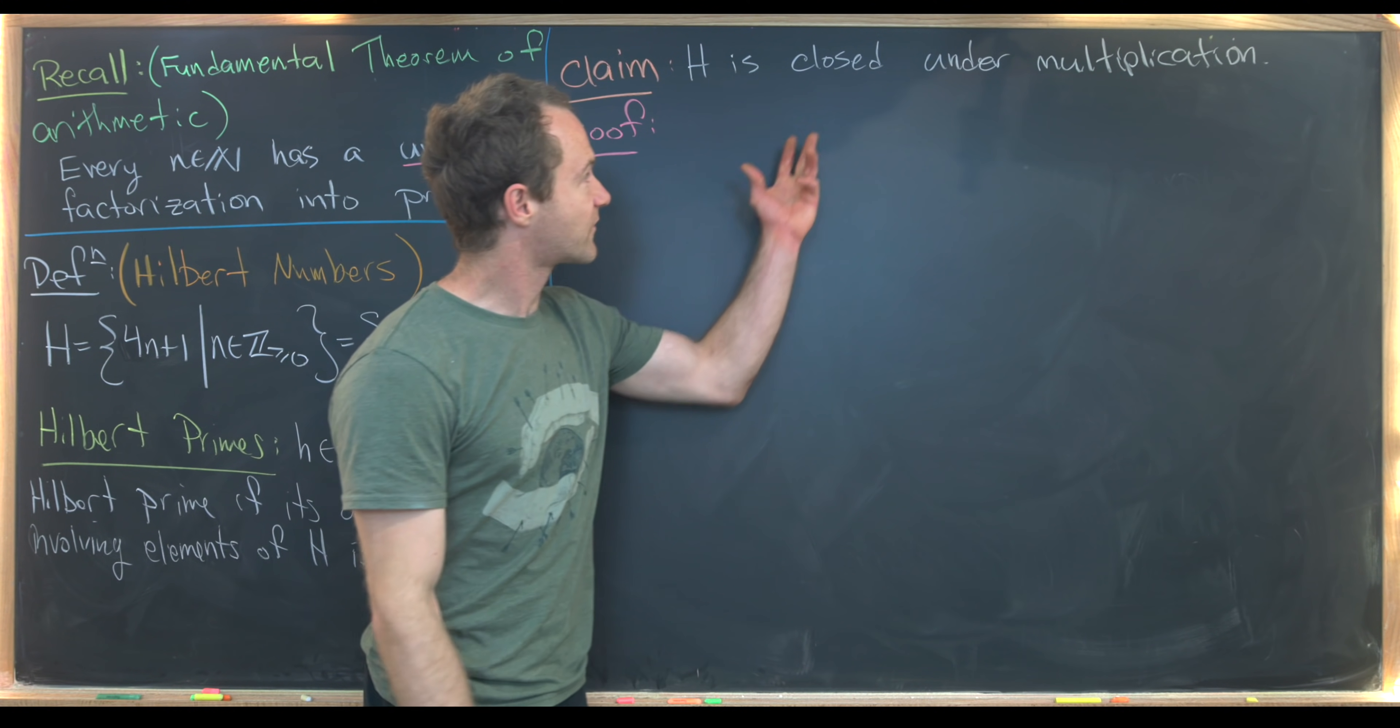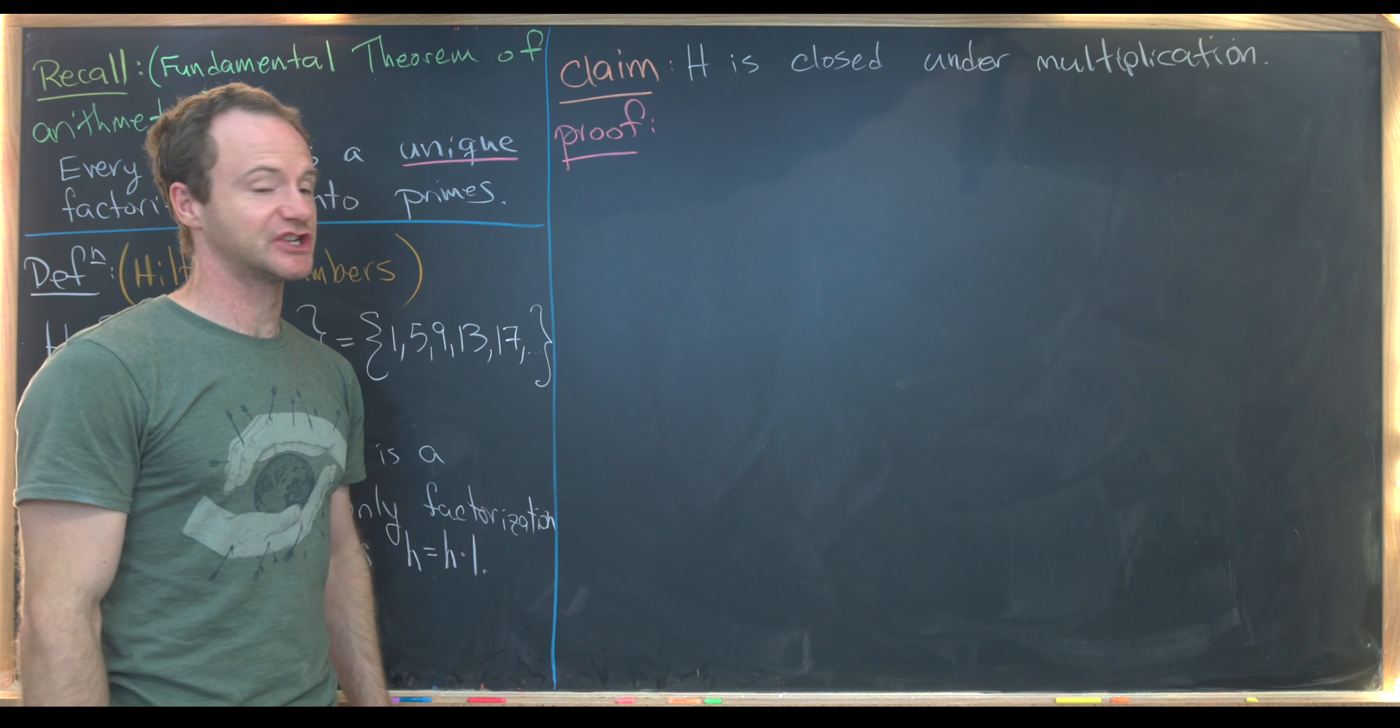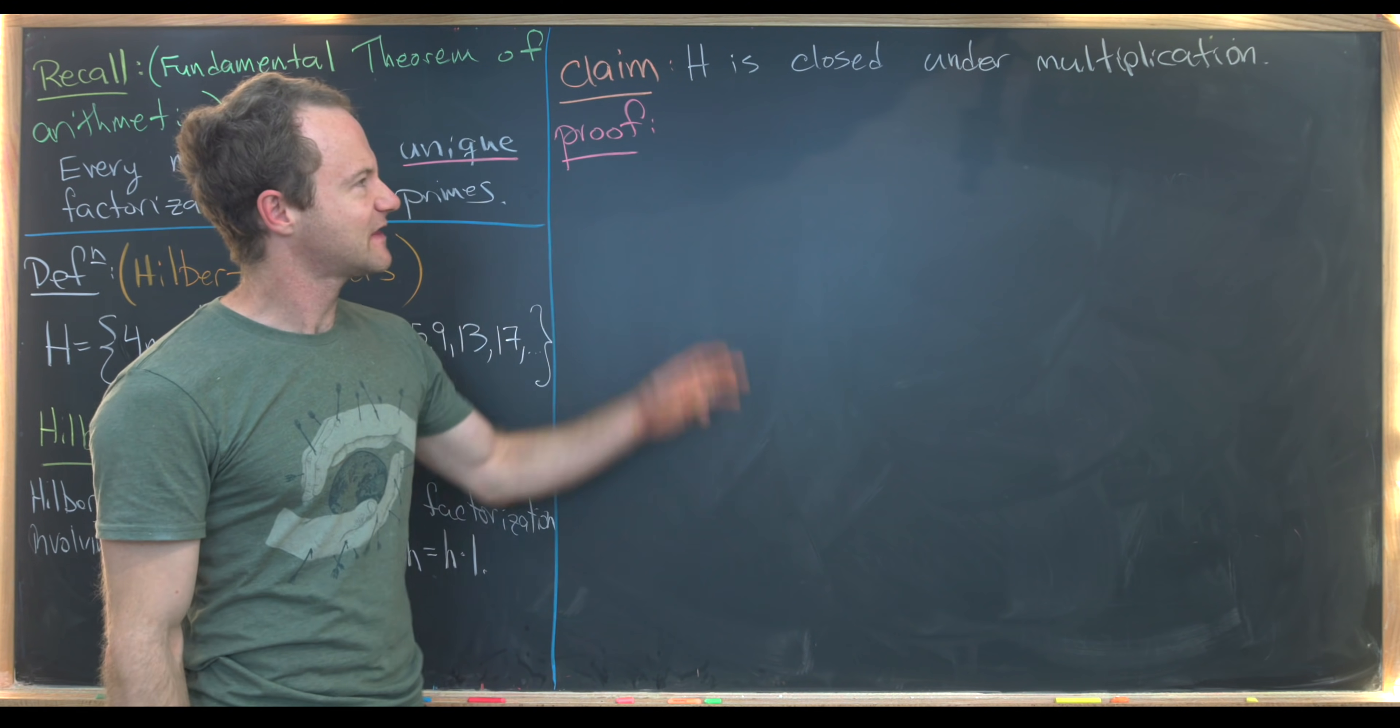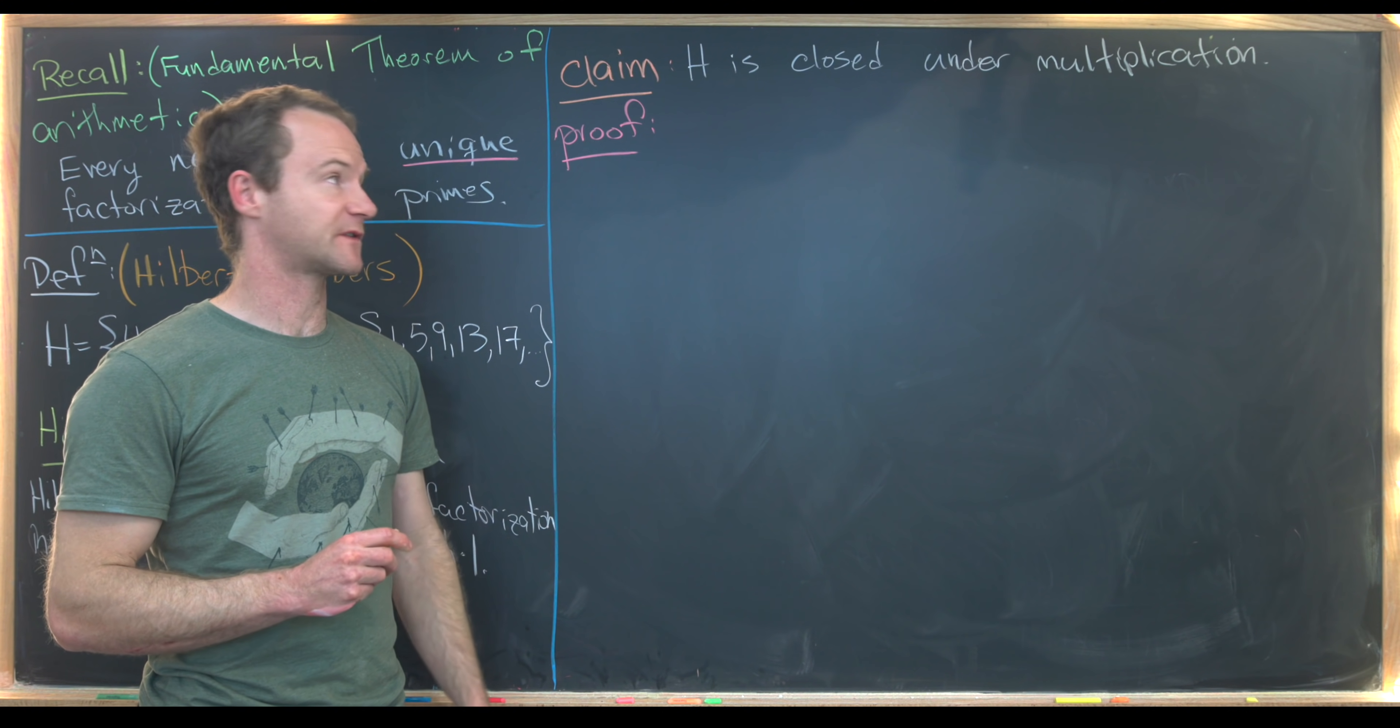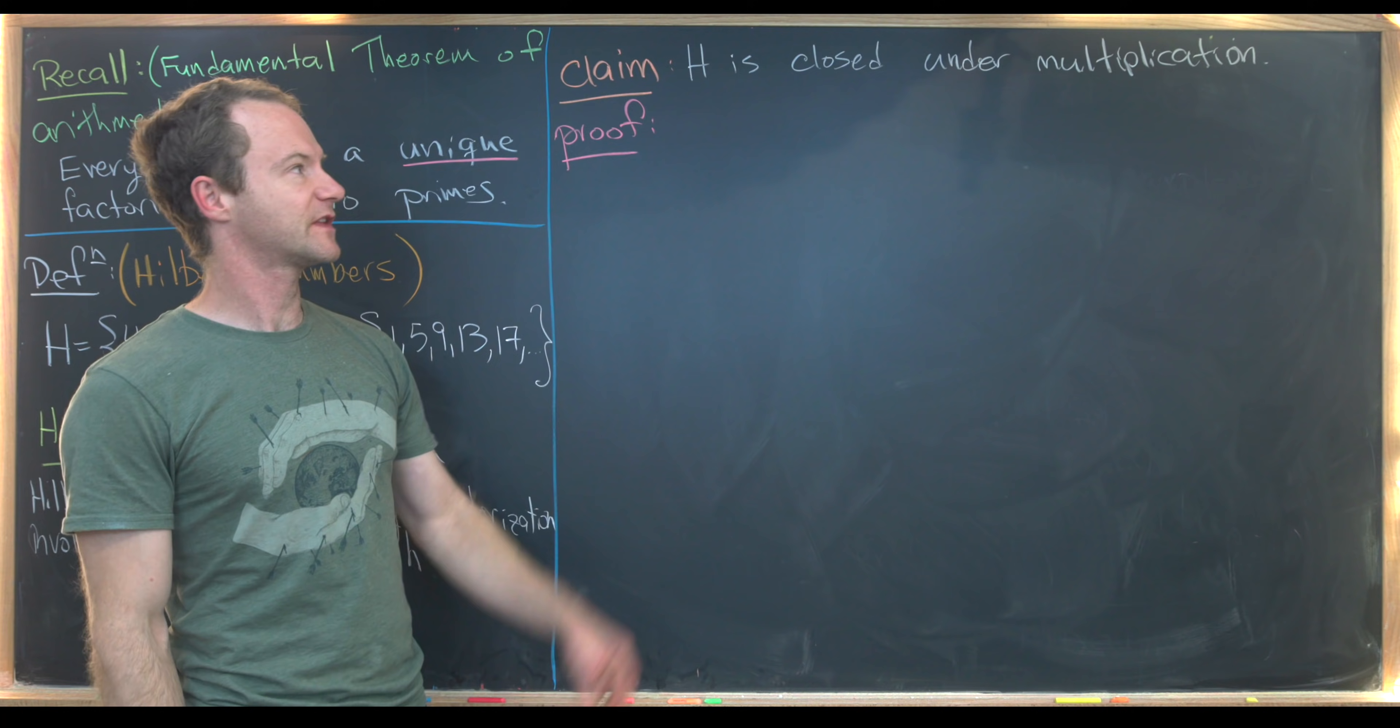So maybe our first goal is to prove the following claim, and that is H is closed under multiplication. It also has a multiplicative identity of 1, and I think that makes H called something like a multiplicative semi-group. So let's maybe prove that.